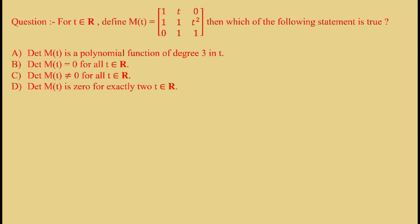Here, we can see that all the options are on determinant of M(t). So, let's first find the determinant of M(t), which is equal to 1×1×1 - t² - t×(1-0) + 0×(1-0), which is equal to 1 - t² - t.